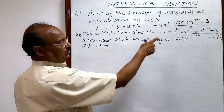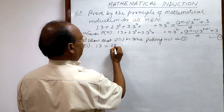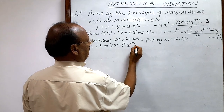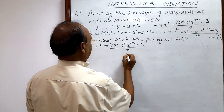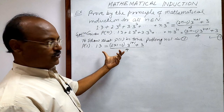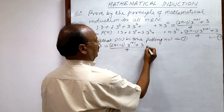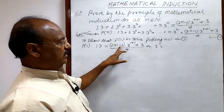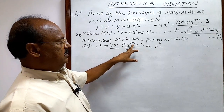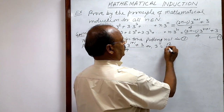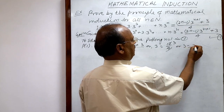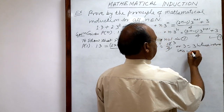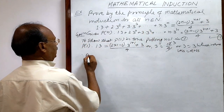So P(1) gives: LHS = 1·3 = 3. For the right hand side, putting n = 1: (2·1 − 1)·3^(1+1) + 3 divided by 4 = 1·9 + 3 divided by 4 = 12/4 = 3. So LHS = RHS, which is true. Therefore P(1) is true.